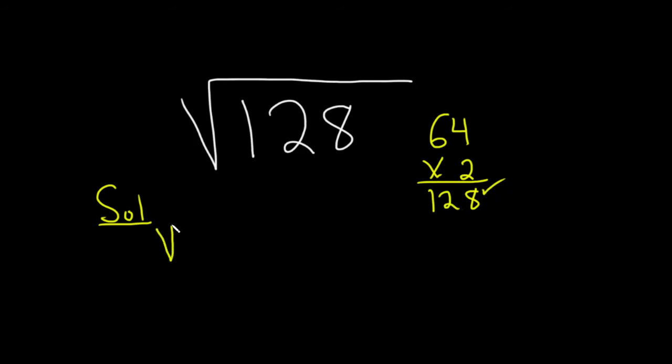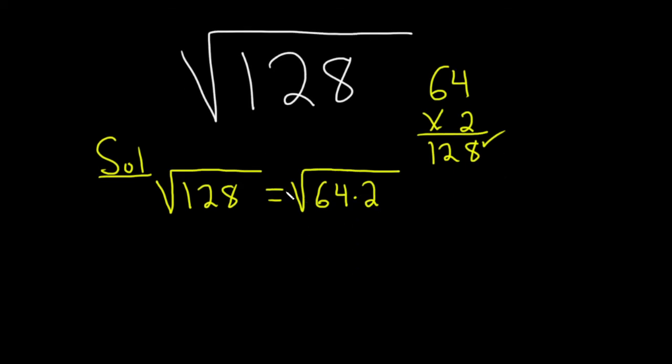So we have the square root of 128. We can write that as, well we can factor it now as 64 times 2. And now we can break this up into two square roots. This will be the square root of 64, 64 times the square root of 2.